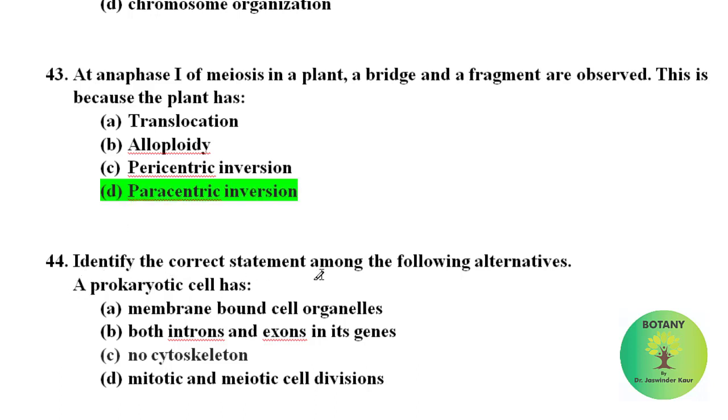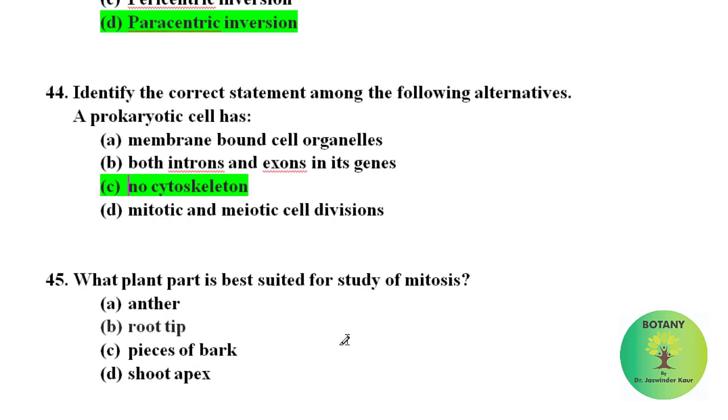Identify the correct statement among the following alternatives. A prokaryotic cell has membrane bound cell organelles? These are absent. Both introns and exons in its genes? It is also absent. No cytoskeleton? Yes, in prokaryotic cells cytoskeleton is absent. Mitotic and meiotic cell division? This is also wrong statement for prokaryotic cells.